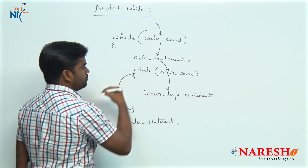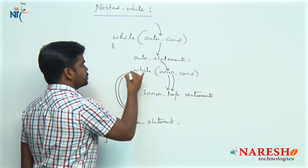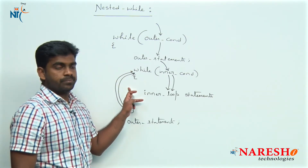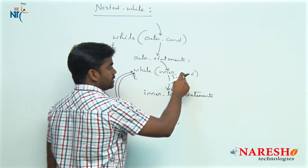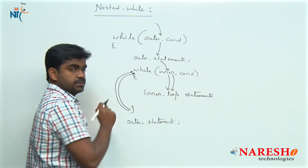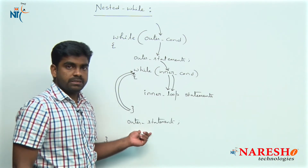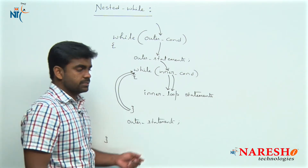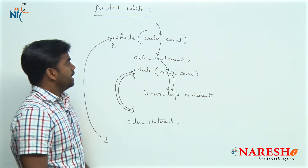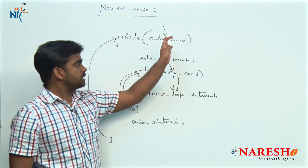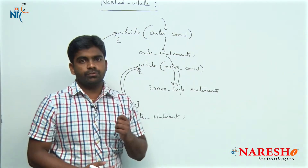Here only it will repeat — again it will check the condition, and as long as the condition is true it will repeat here only. When the control comes out of that, suppose if the inner condition has failed, then the control comes to the outer statements. If the inner loop condition has failed then it will execute the outer statements, and after execution of outer statements the outer while loop repeats. Again, if the outer condition is true, once again the control moves inside and all the things execute and repeat.